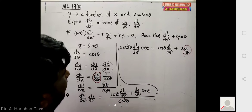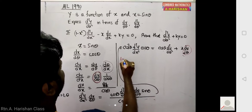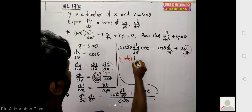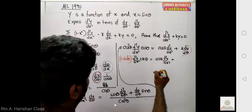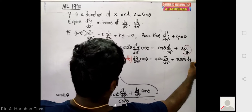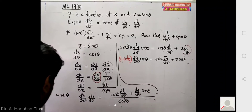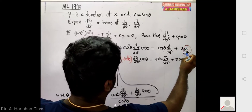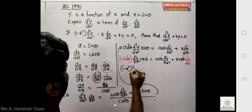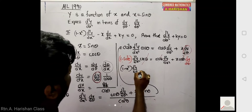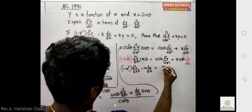Substituting and writing 1 minus sin² θ equals 1 minus x², the left side becomes 1 minus x² times d²y/dx² times cos θ. On the right: cos θ times d²y/dθ² plus x times cos θ times dy/dx. The cos θ factors cancel, giving 1 minus x² times d²y/dx² minus x times dy/dx equals d²y/dθ².